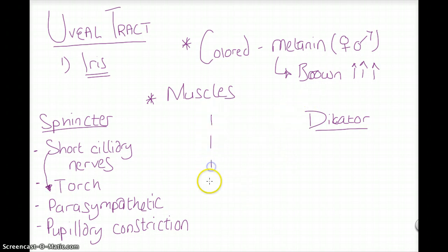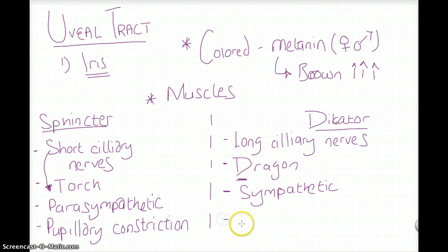Now onto the other side. The dilator muscles are under the control of the long ciliary nerves. The situation in which this could be activated is if you are walking in town and you see a dragon. Your eyes are going to dilate. This is under the control of the sympathetic nervous system, and the end result is pupillary dilation.